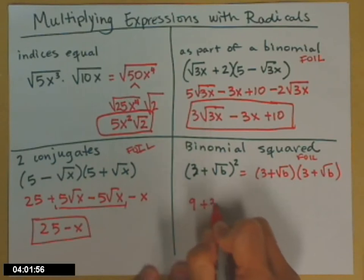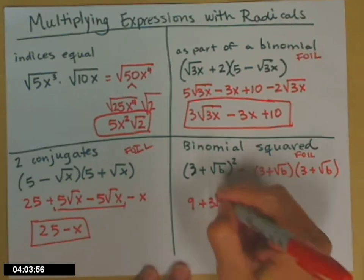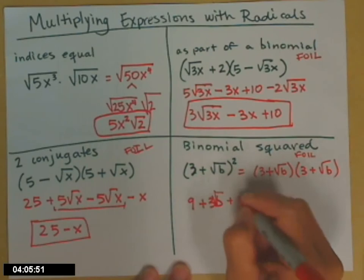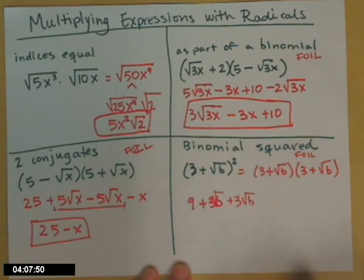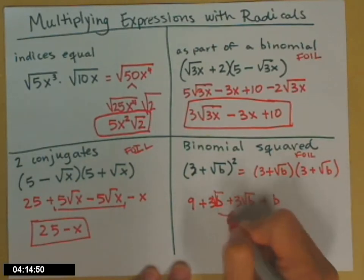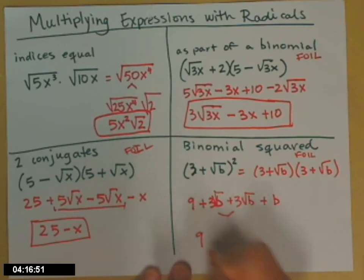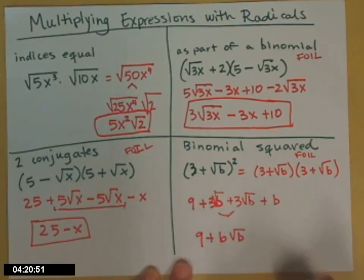9 plus 3b square root b plus 3 square root b. And then my last term is square root b times square root b. That's just a b. Tidy up the two in the middle and I'll have a 9 plus 6 square root b plus b.